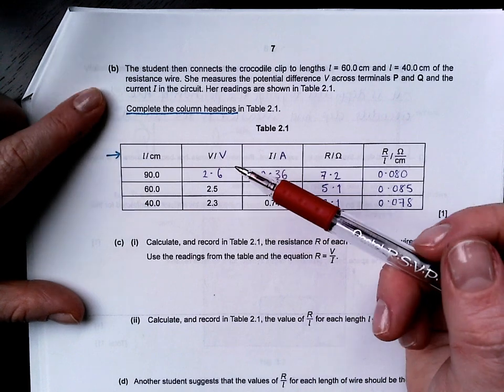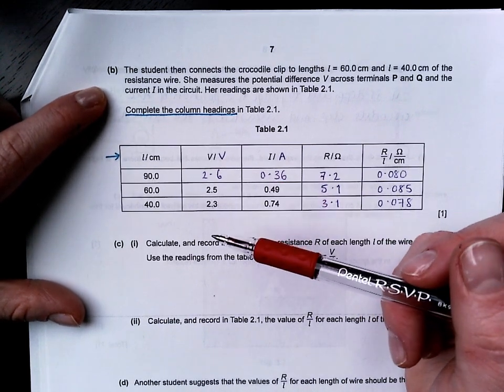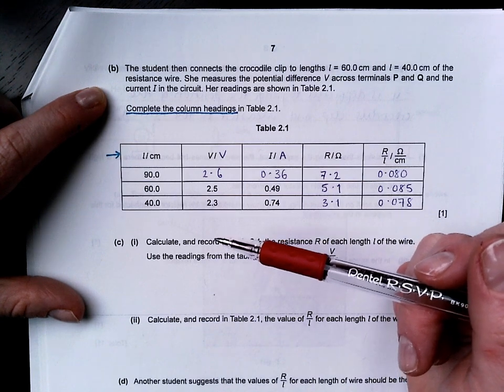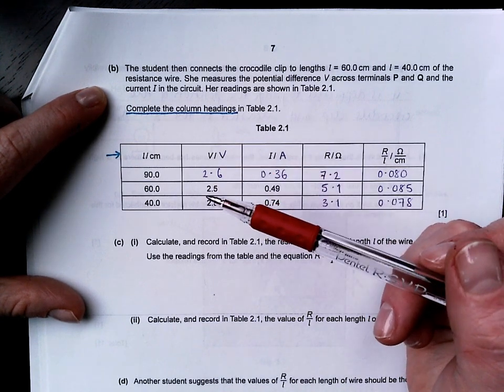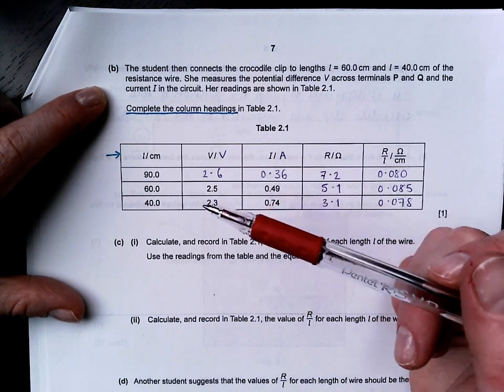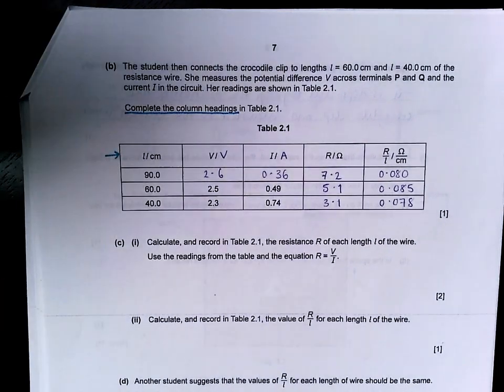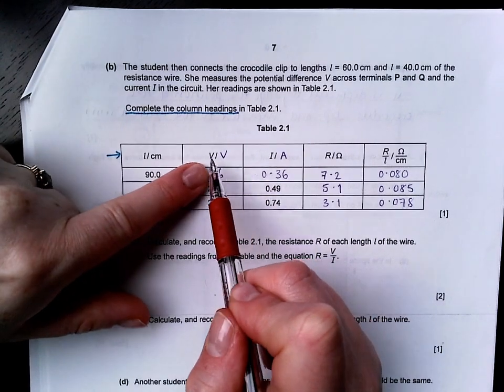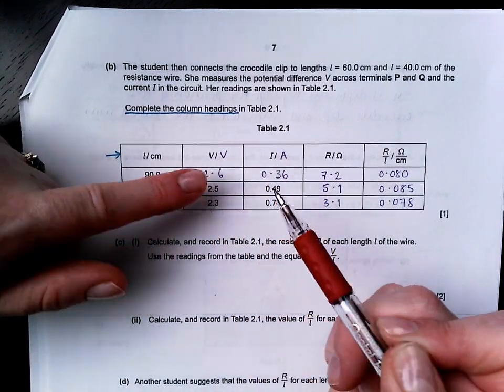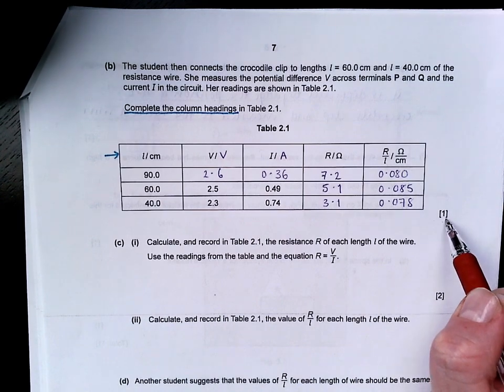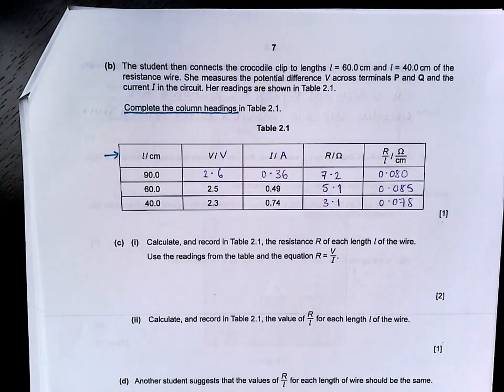We're not reading carefully. The student then connects the crocodile clip to lengths 60cm and 40cm of the resistance wire. Readings are as shown. Complete the column headings for a mark. By writing V for volts and A for amps for the voltage and current, you've got a mark. If you lost that mark, you are giving them away.